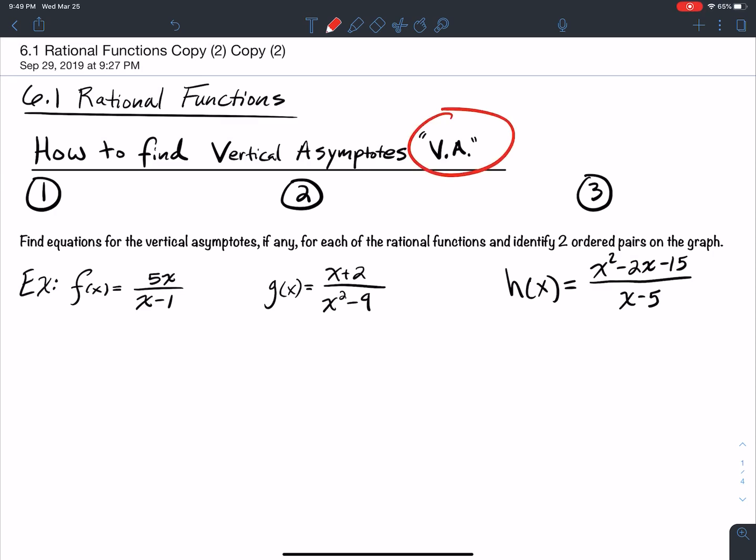VA is what we use to abbreviate vertical asymptotes. Number one, simplify. If you don't know what you're doing, at least try to simplify. I'm looking for you to factor. If you can factor it in any way, try to factor it. If you can factor it, then maybe something will cancel and that will simplify it.